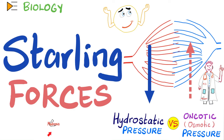Hey guys, it's Medicosis Perfectionators, where medicine makes perfect sense. Let's continue our biology playlist. In the last video, we talked about gas exchange — how your cells take oxygen from the arterial side and give carbon dioxide to the venous side, because this is needed for internal or cellular respiration. But have you ever wondered why blood leaves the arterial side to go to the cell and then comes back to the venous side to go to the heart? This is the story of the Starling forces.